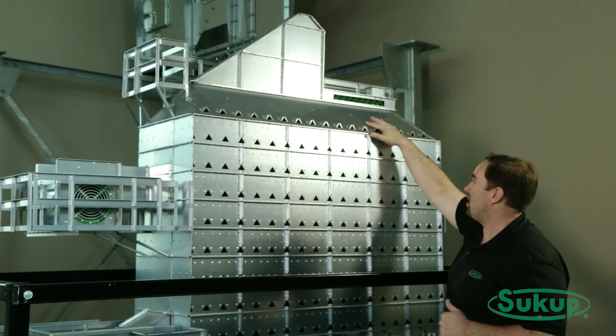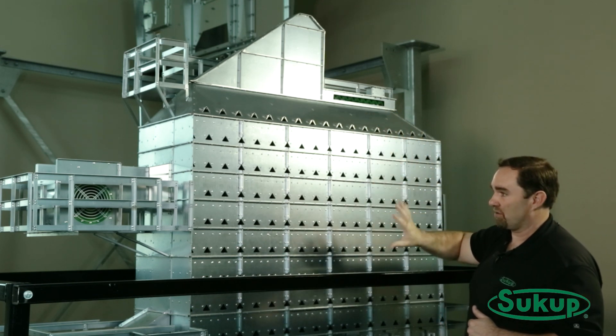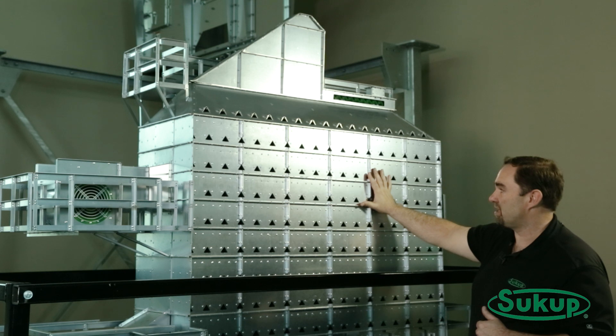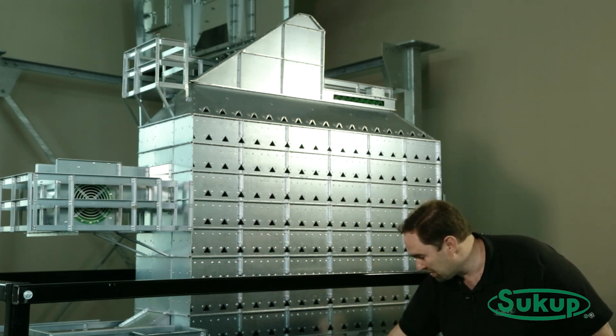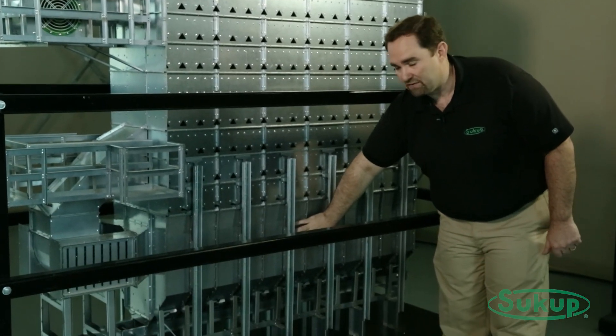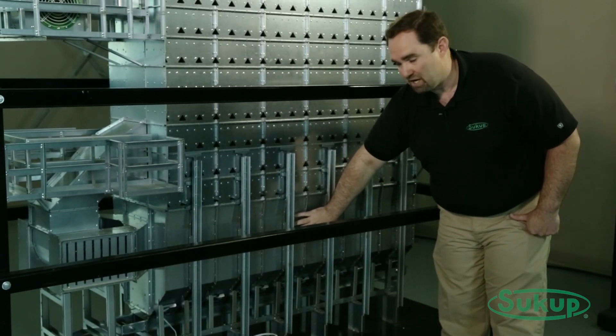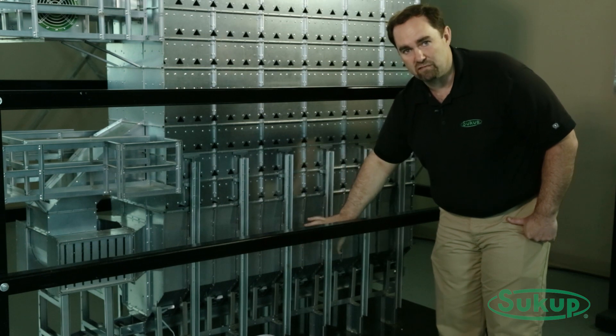Grain then moves from the fill system down the wet bin into the grain columns. There's a grain column on each side. It moves down through these mixed flow sections where the drying takes place, and then down into the screen section in the bottom. This is a unique feature of the Sukup dryer: we transition into screens to do vacuum cooling.